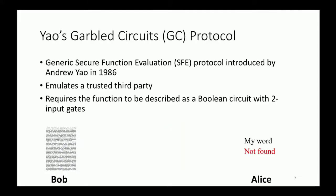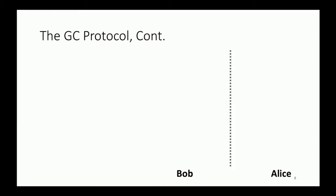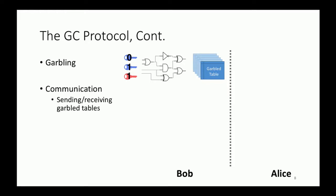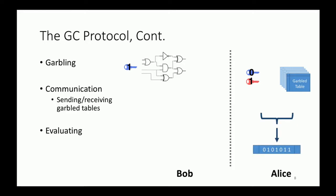A very simplified explanation of the GC protocol is as follows. It has three main phases. In the first phase, Bob has to describe the functionality as a boolean circuit with two input gates, so here the functionality would be the stable matching algorithm. Next he will assign random keys to each wire in the circuit and for each gate he encrypts the output wire using input wire keys and forms garbled tables. In the second phase, Alice receives all garbled tables together with the keys corresponding to her input. And in the third phase, Alice starts decrypting each gate one by one until she reaches the true output result of the computation.